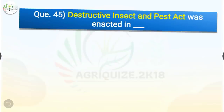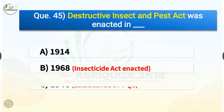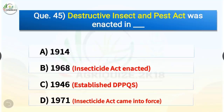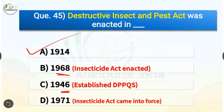Question number 45. The Destructive Insect and Pest Act was enacted in which year? The options are 1914, 1968, 1946, or 1971. The correct answer is option A, 1914. The Destructive Insect and Pest Act was enacted in 1914, whereas the Insecticides Act was enacted in 1968. The Directorate of Plant Protection, Quarantine and Storage was established in 1946, and the Insecticides Act came into force in 1971.